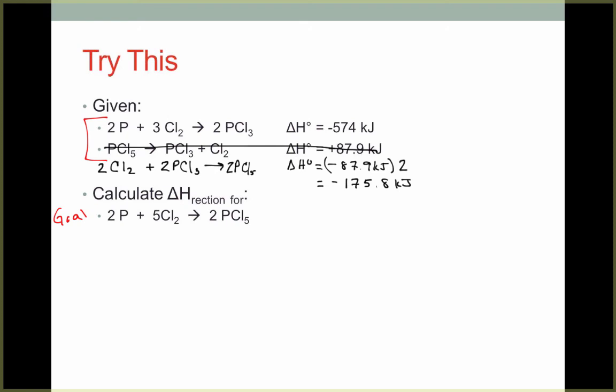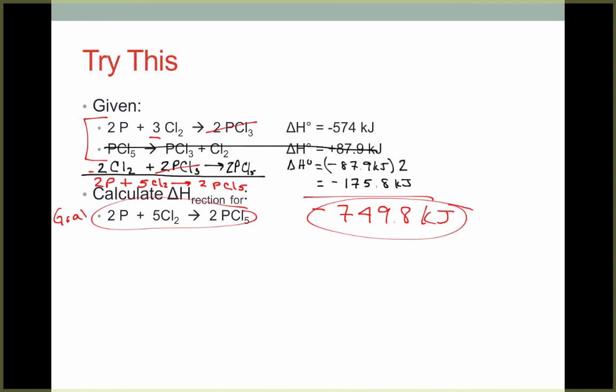Now it looks to me like everything is in order. So let's see if our reaction adds up to the goal. I'm going to start by canceling anything that appears on both sides. So we see that we have 2 PCl3 here and 2 PCl3 here, so I can get rid of those. Now what's left? Well, I have 2P, I'll carry that down. I have 3 Cl and another 2 Cl, which gives me 5 Cl2. And finally, I have 2 PCl5. Notice that this matches my goal reaction. Therefore, I've manipulated the equations correctly. And I can finish off by simply adding our delta H's. So we have negative 574 plus negative 175.8, which gives me negative 749.8 kilojoules. This is the delta H for my goal reaction.